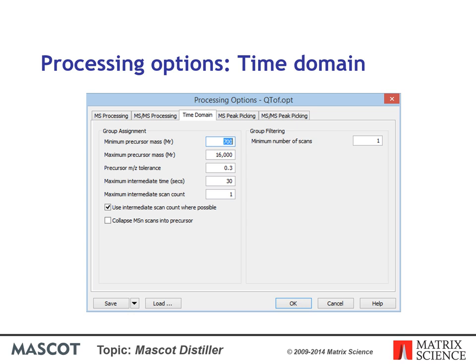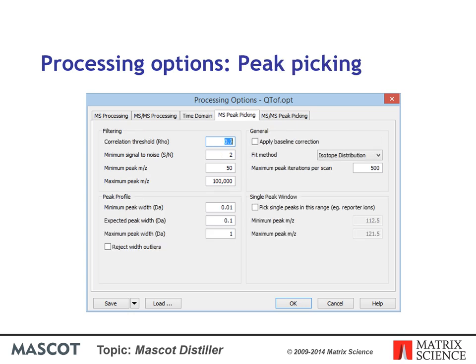'Collapse MSN scans into precursor' causes the peaks in, say, an MS3 scan to be added into the peak list of the parent MS2 scan — this seems to be the best way to make use of MSN data in a database search. There are separate tabs for MS and MSMS peak picking parameters with almost identical controls, which is useful for a hybrid instrument where the two scan types may have very different characteristics. If the same settings can be used for both, there is a checkbox on the MSMS peak picking tab for 'same as MS peak picking'.